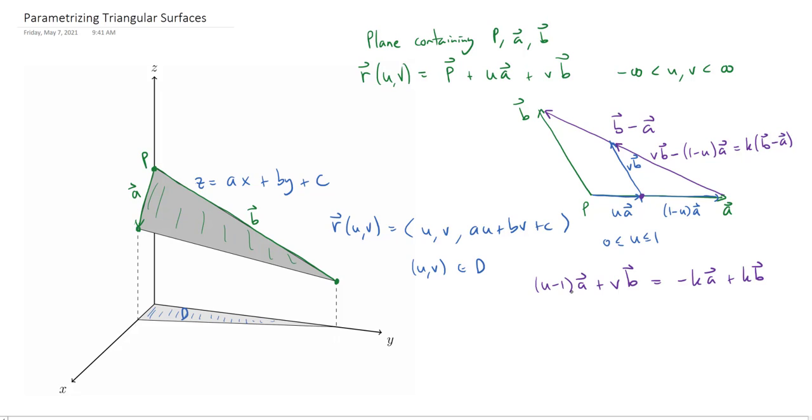And now I know that the coefficient in front of a in each of these a's has to be the same. So u-1 is -k and v is equal to k. Okay, of course I could rewrite this as k is 1-u. So v is k and k is 1-u. And so we conclude that v is actually 1-u.